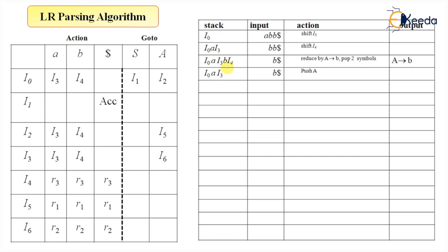After popping i4 and b, the new exposed state is i3. The second step is to push the left-hand side — push capital A. The third step is to go to the new state: i3 on input capital A goes to state i6. This three-step reduction is what many books condense into a single step, but I've written it explicitly.